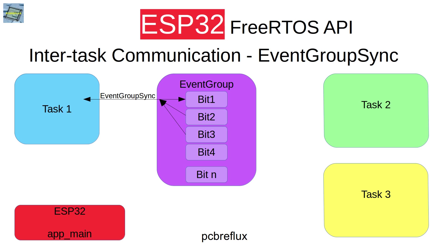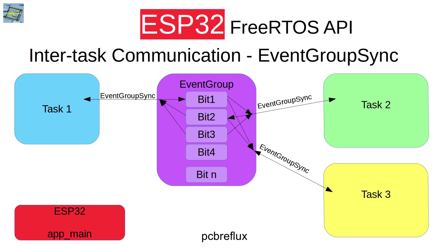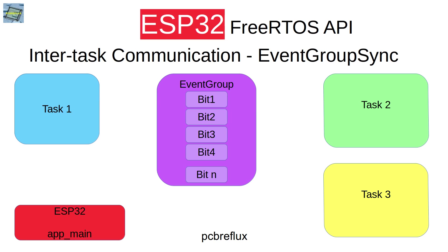The first task also sets its own bit so that all other tasks are informed that it is ready and waiting. Then the second task, when it finishes its work, reads the bits of the first and third tasks and sets its own ready bit. The third task does the same — reads the first and second bits and sets the third bit. At that point all tasks are synchronized, all bits are released, and all tasks continue.